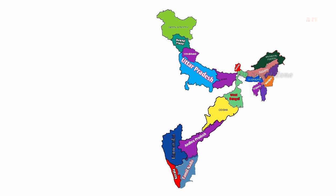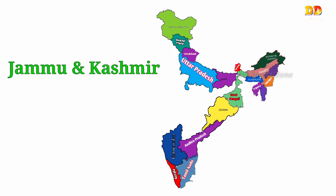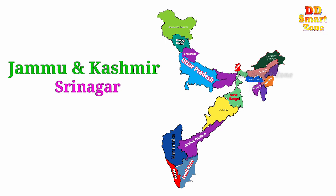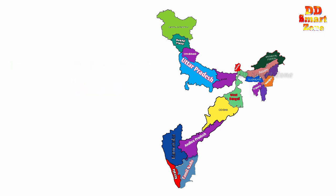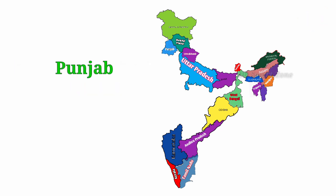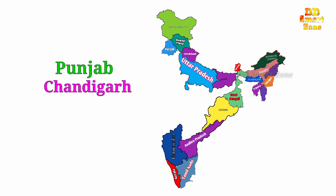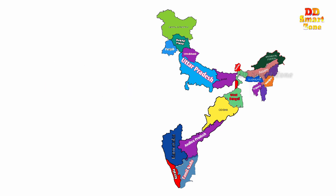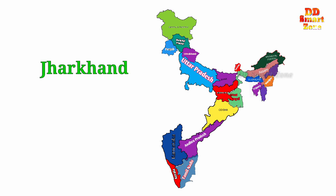State name Jammu and Kashmir, capital Srinagar. State name Punjab, capital Chandigarh. State name Jharkhand, capital Ranchi.